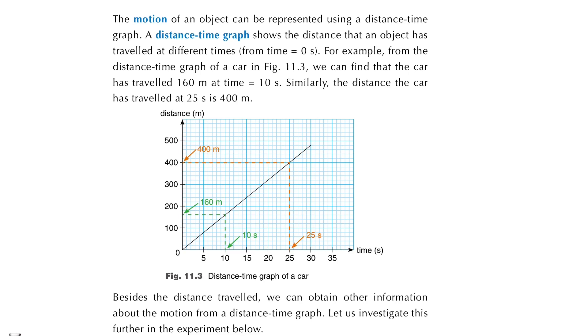And here we can use this graph to predict at different moments what the distance traveled by the bus is. Or we can use this graph to find out when the bus will have traveled a particular distance. For example, in this graph at 10 seconds, we know that the object will have moved 160 meters, and at 25 seconds it has moved 400 meters. So this is the basic of the distance-time graph.